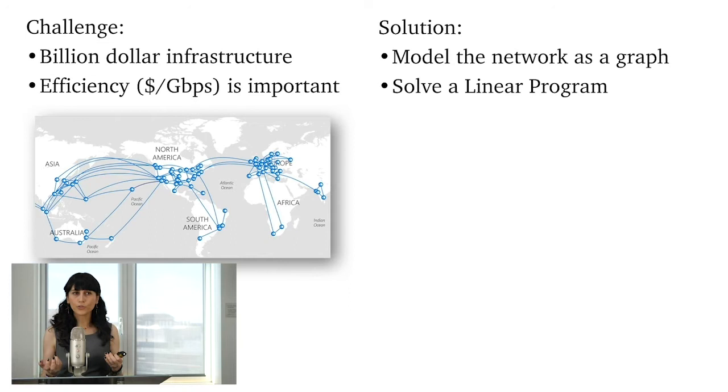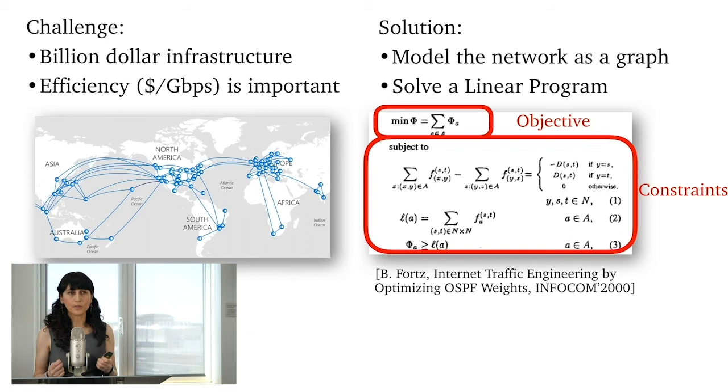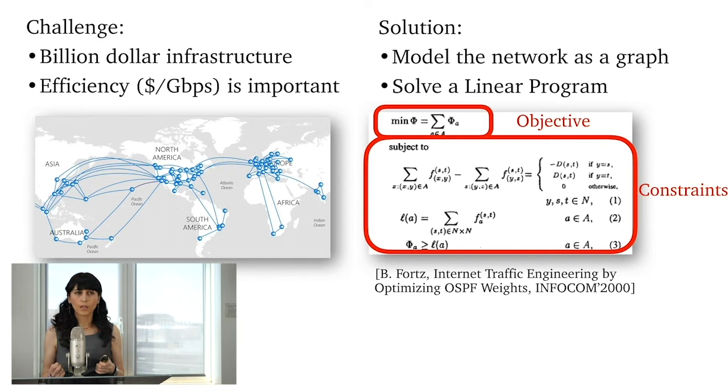And so the traditional solution is to model network as a graph and then solve a linear program optimization function. Something like this, that what I'm showing here is from a prior work paper. And so we can see that there's an objective function and there's a set of constraints about this.